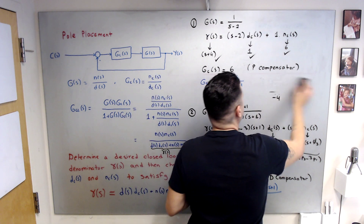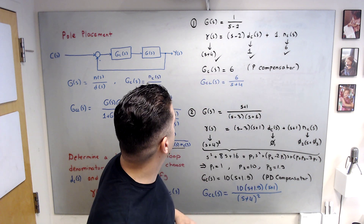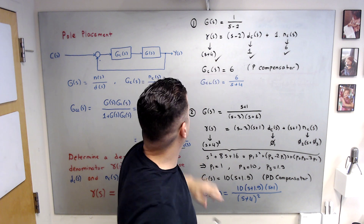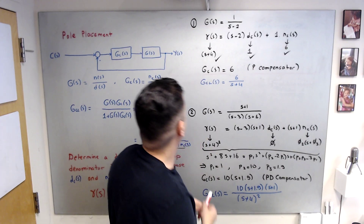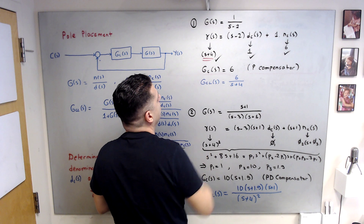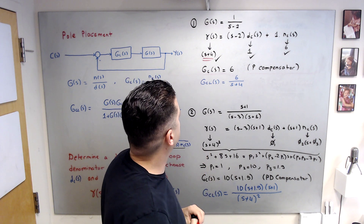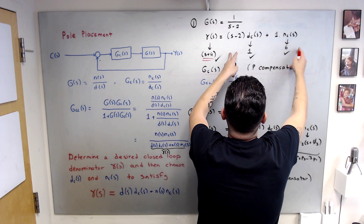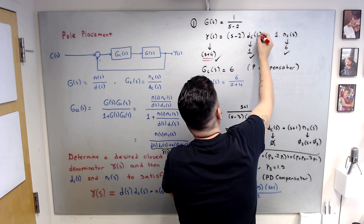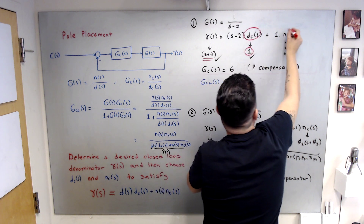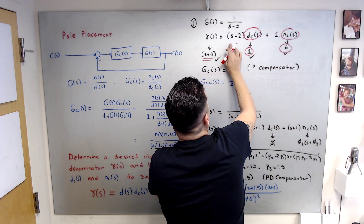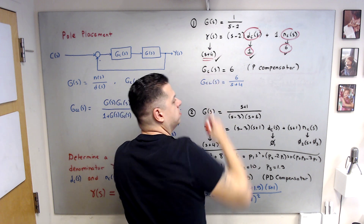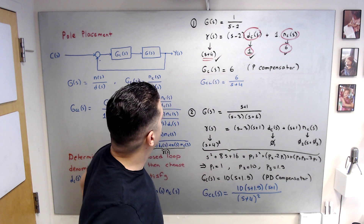If your aim is simply to stabilize this system, you can choose any pole that remains on the left half plane of the complex plane. I'm going to choose gamma(s) = s + 4, which is first order — also motivated by the fact that the right-hand side looks like first order. If you simply select DC = 1 and NC = 6, you get (s−2) + 6, which gives s + 4. We do the match.